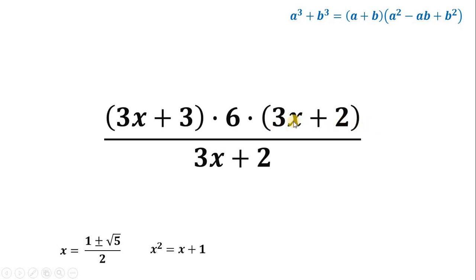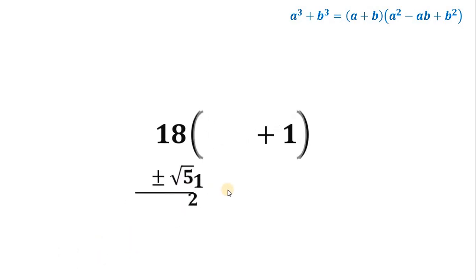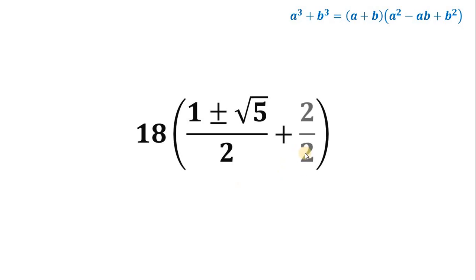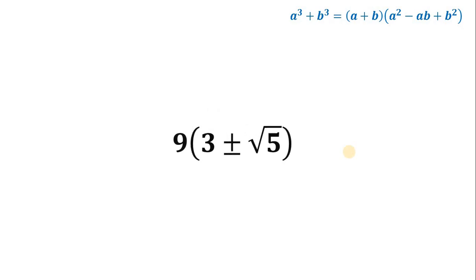Notice that if we factor out 6 from the expression 18x plus 12, this gives us 6 times 3x plus 2. We now have a factor of 3x plus 2 in the numerator and 3x plus 2 in the denominator, so we can cancel both. This gives us 6 times the quantity 3x plus 3. Factoring out 3 gives 18 times x plus 1. Substituting x equals 1 plus or minus square root of 5 over 2, we write 1 as 2 over 2, so x plus 1 becomes 3 plus or minus square root of 5 over 2. Then 18 divided by 2 gives 9, yielding a final value of 9 times 3 plus or minus square root of 5.